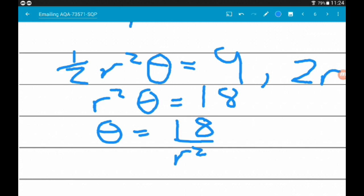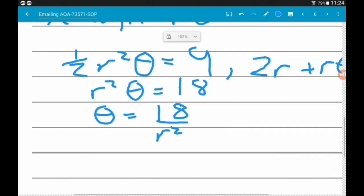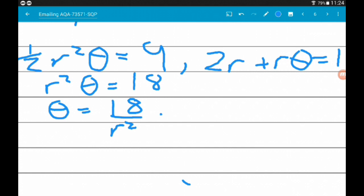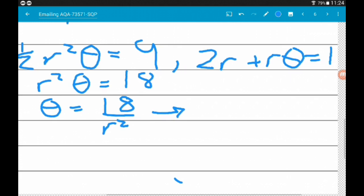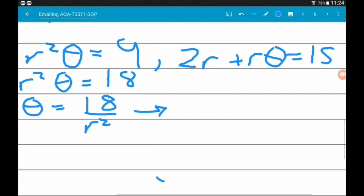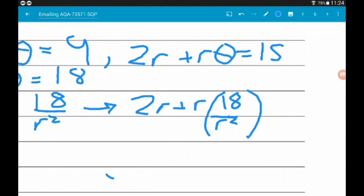So what we're going to do now is substitute that expression for θ into the equation of the perimeter. So if we take this over here now, θ is 18/R². So we've got 2R + R × 18/R² = 15.